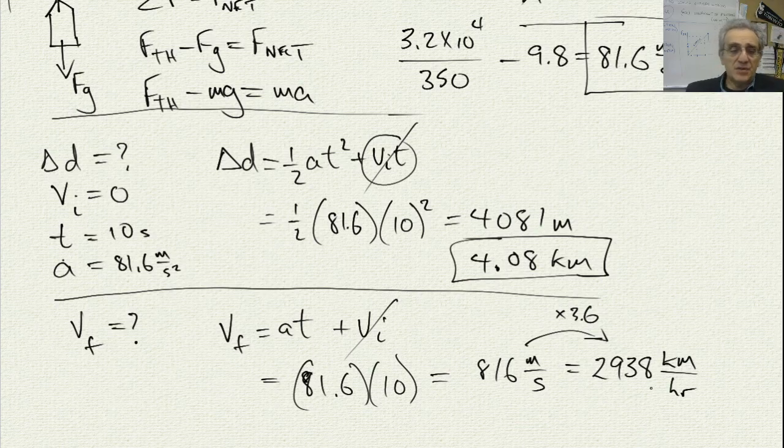And after 10 seconds, by the way, just a heads up, we're not going to be able to put a human in this rocket. Why? Well, if you take a look at the acceleration here, we're at 81 meters per second squared.